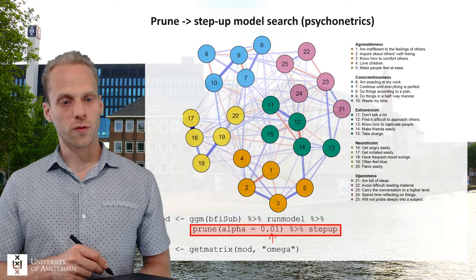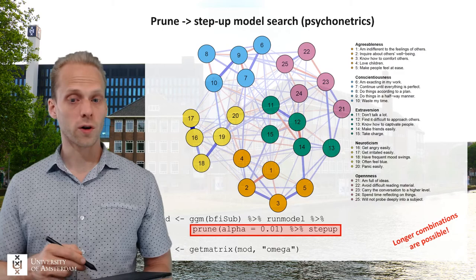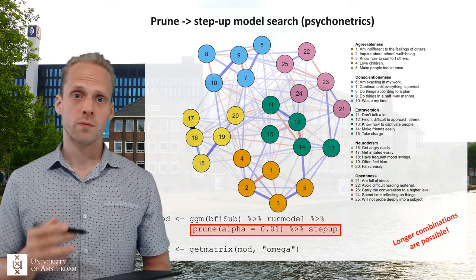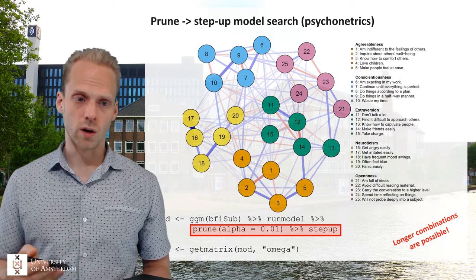So you have all the main things already included in one go, and then you can do step-up search to add other things. You can also think of longer combinations, like prune, step-up, prune, step-up, prune, step-up, to get a really powerful estimation algorithm. This will improve the prune because it will add edges back to the model that you may have removed with pruning that you didn't actually want to remove. So it will be better; it's still quite slow of course because it still does step-up estimation.